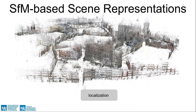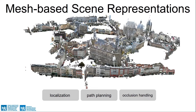While achieving state-of-the-art results, this type of scene representation is tailored to the localization task and cannot be used for other tasks. In this paper, we investigate using meshes for visual localization, as they can be used for other tasks as well.